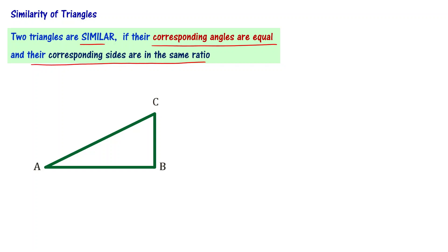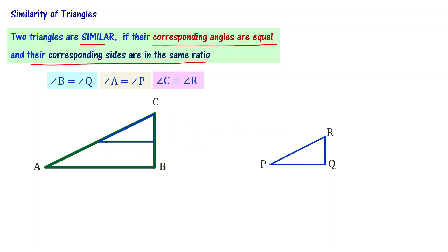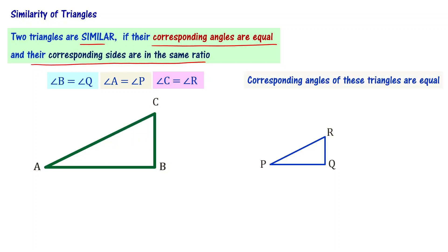Let us consider triangle ABC and triangle PQR. Observe that angle Q is equal to angle B, angle P is equal to angle A, and angle R is equal to angle C. This means one angle of triangle ABC is equal to one angle of triangle PQR. Similarly, the second and third angles also correspond. That is why we can say that the corresponding angles of these two triangles are equal.